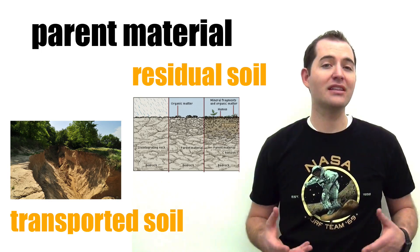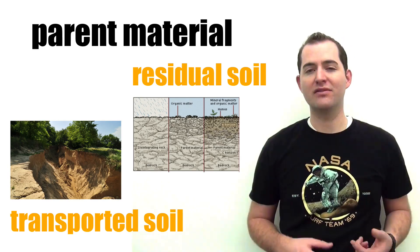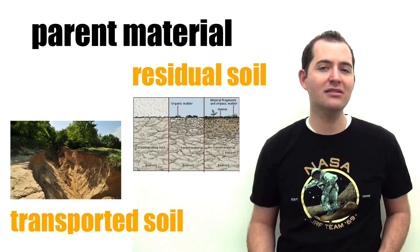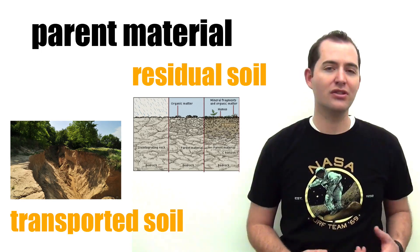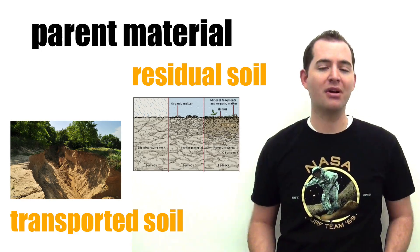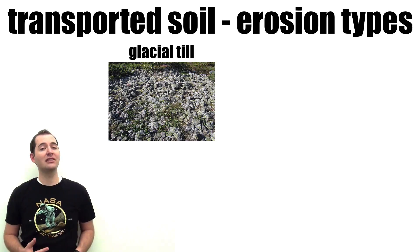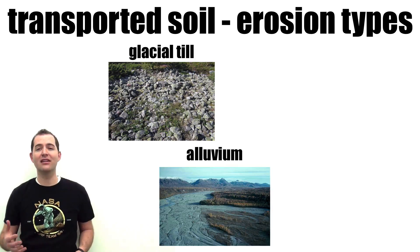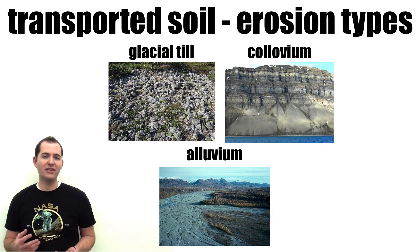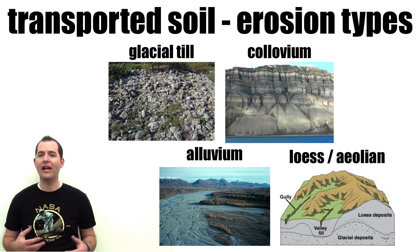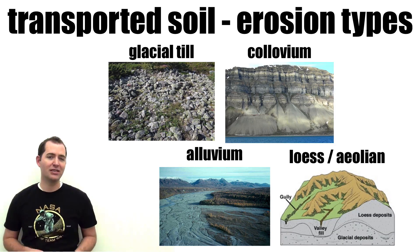Residual soil is soil that's found in the location where it was formed, and transported soil is soil that's made somewhere else and moved by erosion to a new location where it becomes a part of the soil profile. Soil that's transported by ice is known as glacial till, while that transported by water is known as alluvium. Coluvium is soil that's been transported by gravity, and loess or aeolian is soil that's been transported by wind.